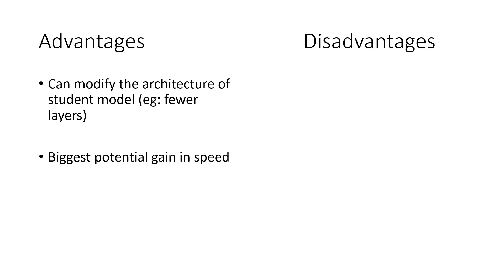Knowledge distillation has several advantages and disadvantages compared to other methods of optimizing your model. One advantage of knowledge distillation is you can modify the architecture of the student model to be different from the teacher model. For example, if your teacher model has 12 transformer layers, that doesn't mean your student model has to have 12 transformer layers. It might have 6 or 2 or something like that. And this sort of architectural change is not really possible with quantization or pruning. Therefore, knowledge distillation has the biggest potential gain in speed compared to all of the other methods that we've seen.